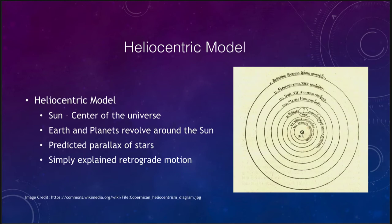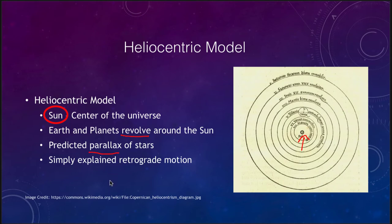The heliocentric model — this is a sketch from Copernicus's book — shows the sun at the center, with Mercury, Venus, Earth, Mars, Jupiter, and Saturn orbiting around it, and then the sphere of the stars. The sun in this case was the center of the universe. The earth and the planets all revolved around the sun. It predicted parallax of stars and simply explained retrograde motion, so epicycles were not needed to explain retrograde motion.